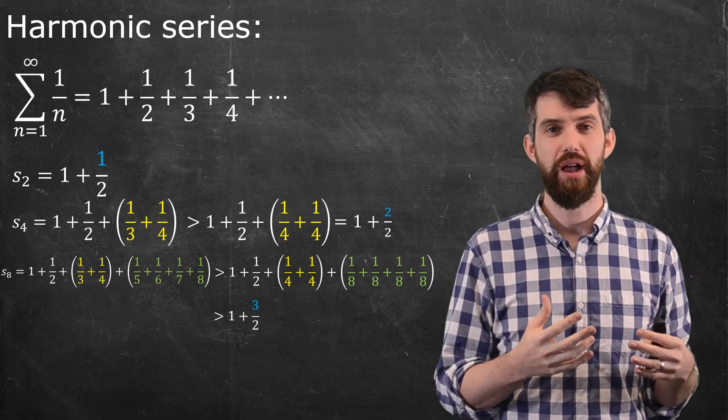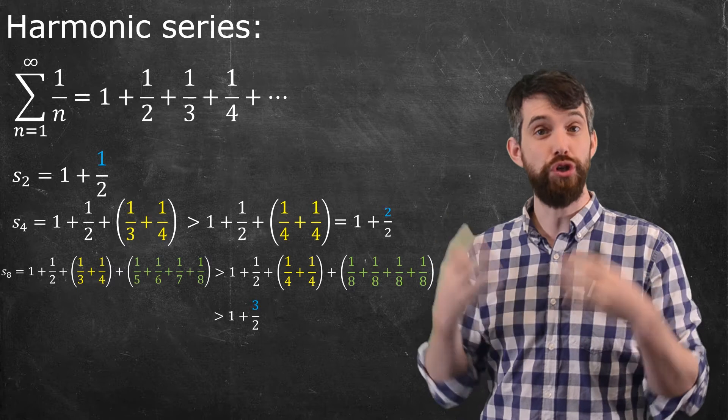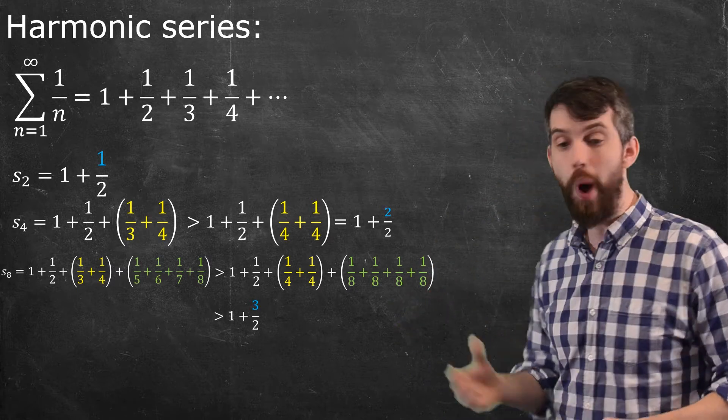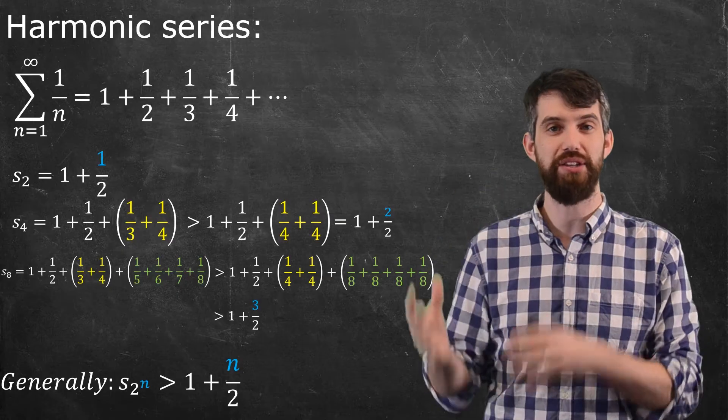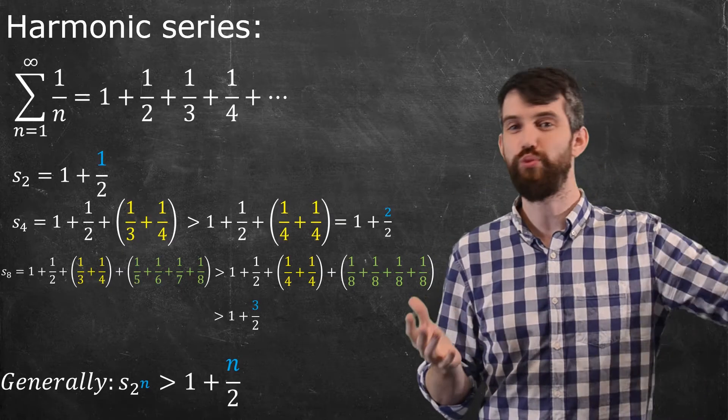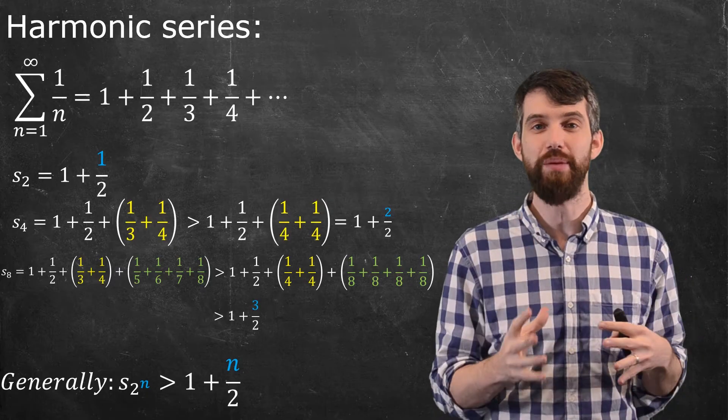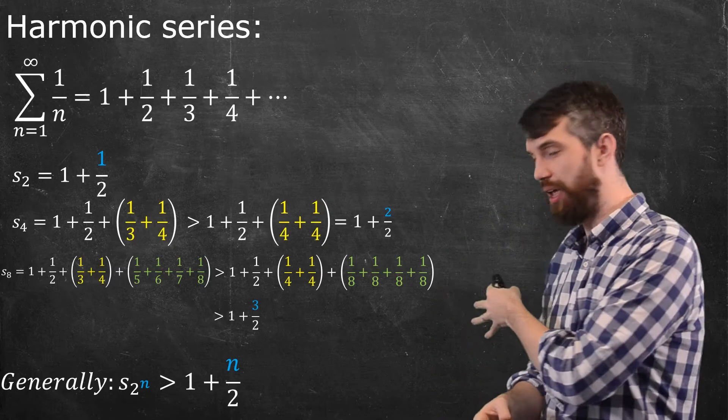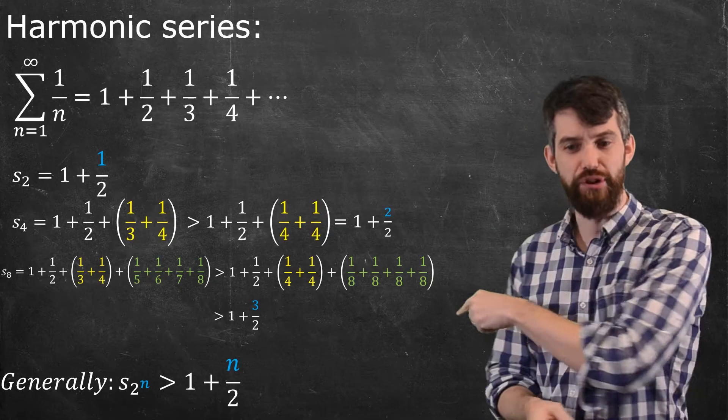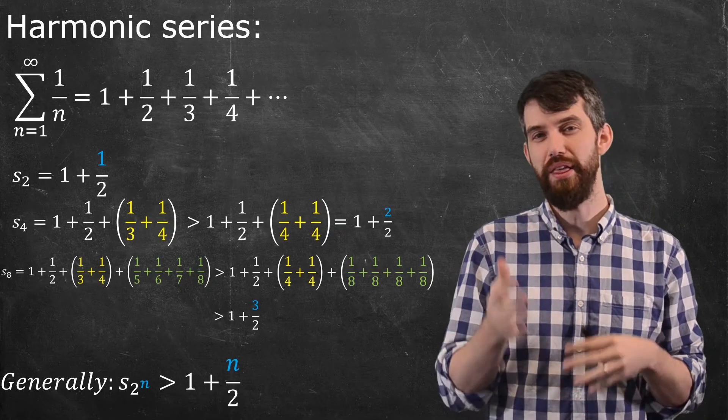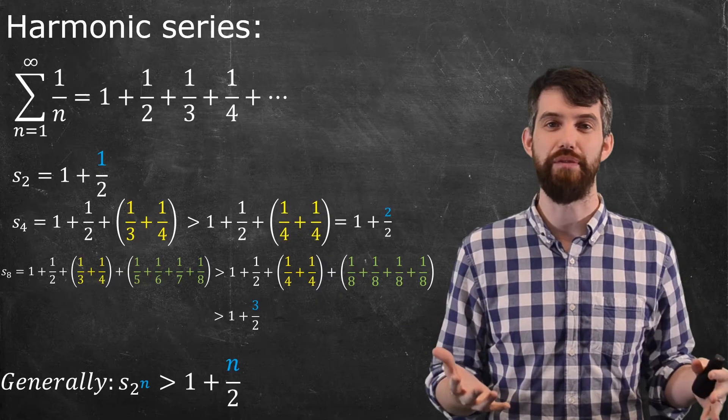So notice the pattern here. When I take s sub 2 to the power of n, it appears to be bigger than one plus n divided by two. So I haven't worried about the rest of the partial sequences. And I have an inequality here. Whatever this s sub n is, is actually bigger than this thing. So if this diverges, if this one plus n over two diverges, which it does, then that is going to mean that the entire thing diverges.